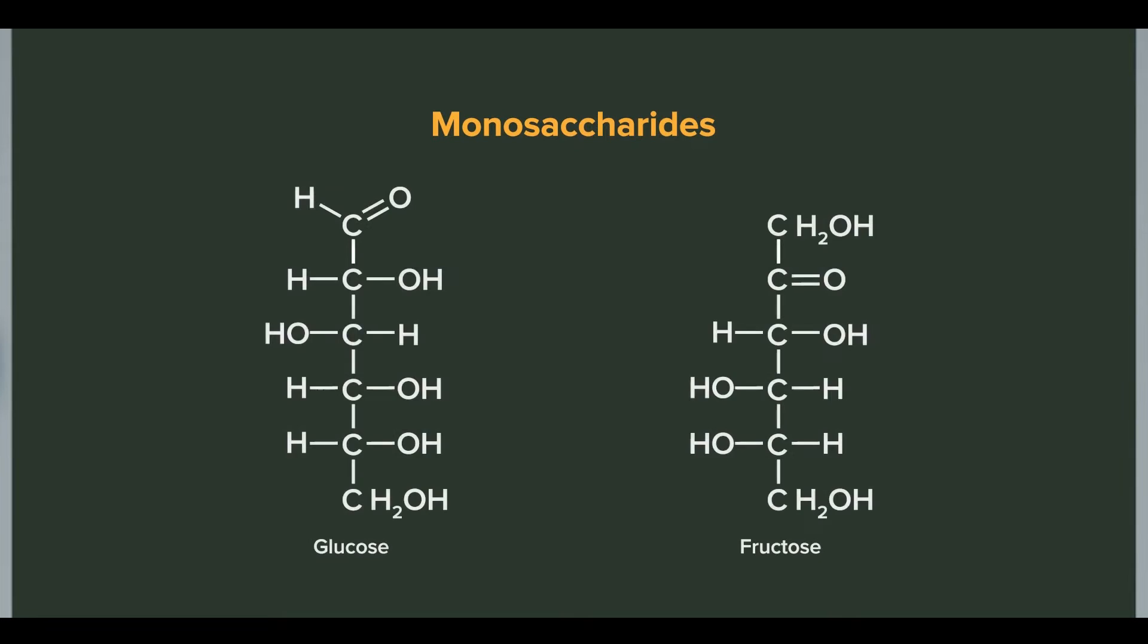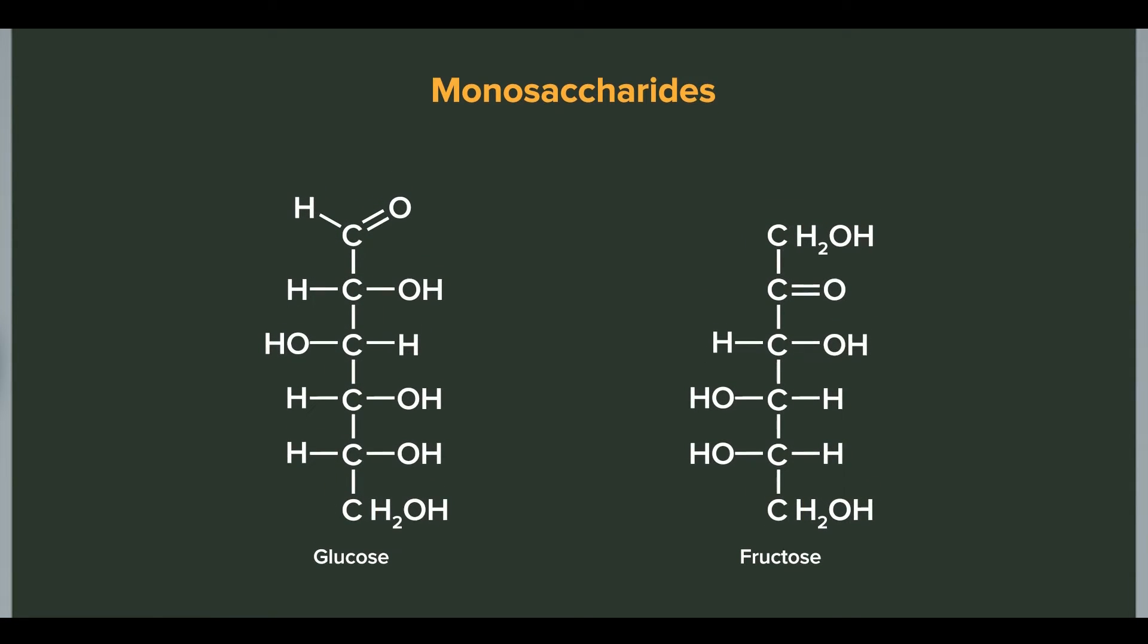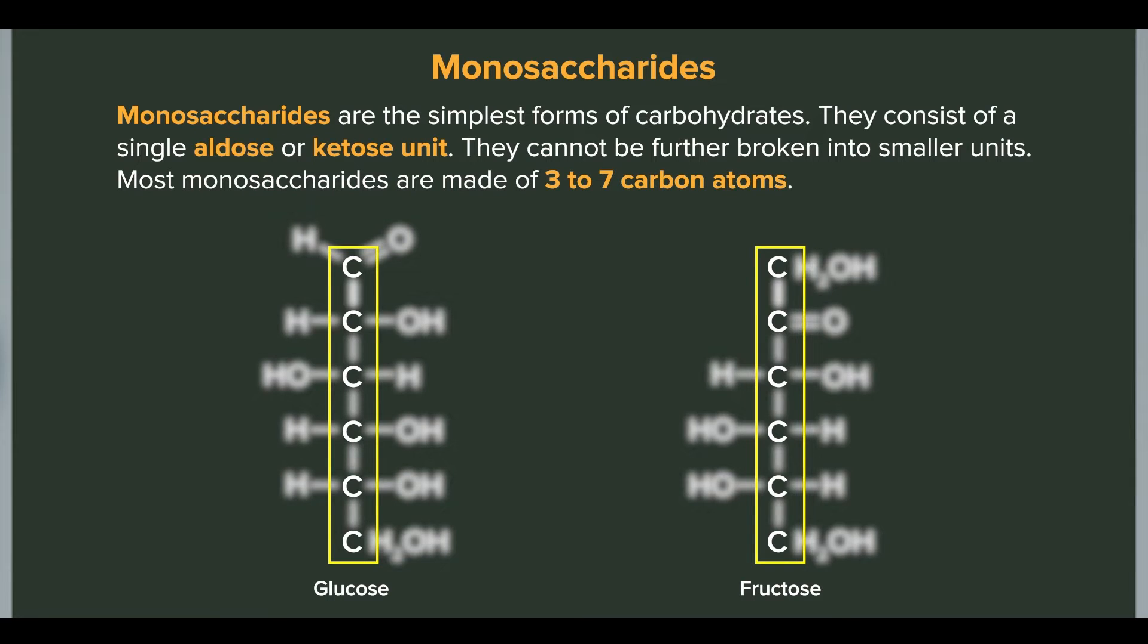Monosaccharides are the simplest carbohydrates. These are aldose and ketose units. They cannot be broken into smaller carbohydrate units. Monosaccharides contain 3 to 7 carbon atoms. In other words, monosaccharides are the simplest forms of carbohydrates. They consist of a single aldose or ketose unit. Most monosaccharides are made up of 3 to 7 carbon atoms.